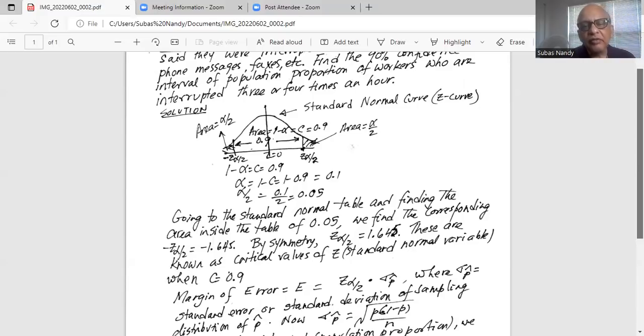Because the standard normal curve is symmetric, the value of positive Z alpha by 2 on the right tail is also 1.645. And because it's on the right of Z equal to 0, it's positive.